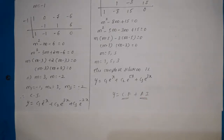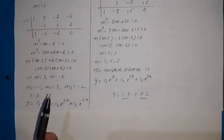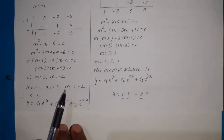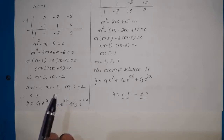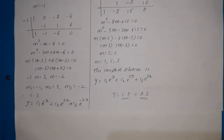If you write only the complementary function as y equals that expression, your answer is wrong, because now there is a non-zero function on the RHS. Whenever a function is given on the RHS, we need to find the particular integral, consider that expression as the complementary function, then find the particular integral, and finally take the sum of complementary function and particular integral. Only then is the answer complete; otherwise it is incomplete and you may lose marks.